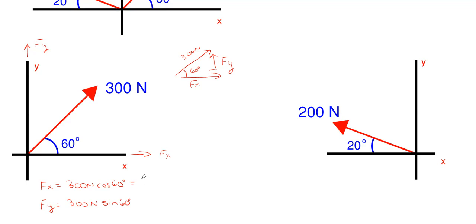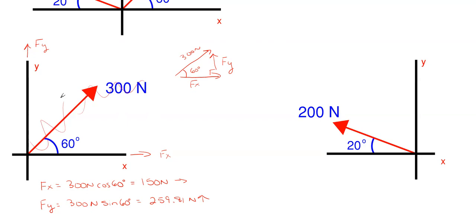So 300 cosine of 60 gives us 150 newtons to the right. And 300 sine of 60 gives us 259.81 newtons in the upward direction. We've taken the 300 newtons and split it into an Fy and an Fx component force.